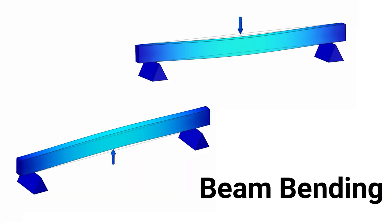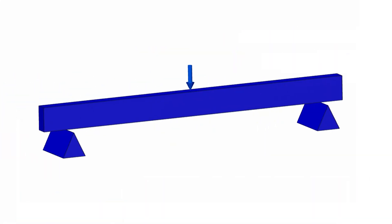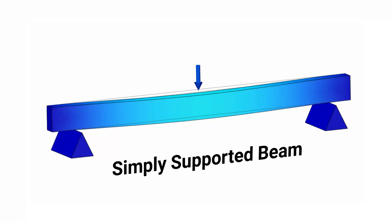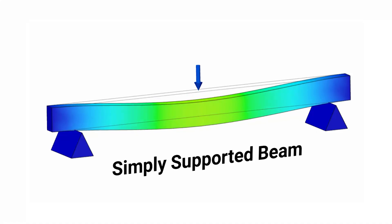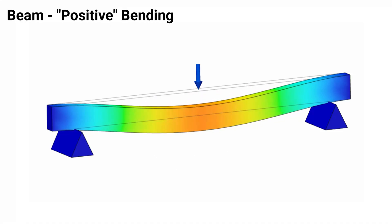Let's talk about the basic concept we call beam bending. Imagine a simply supported beam with a concentrated load acting directly in the middle. As this load increases, we will have a special case called positive bending.